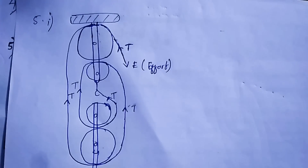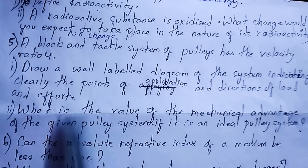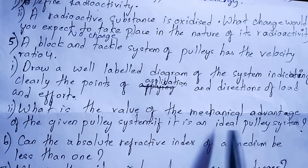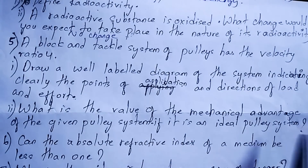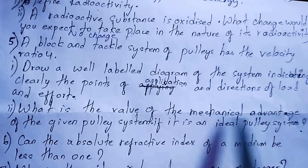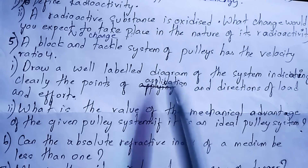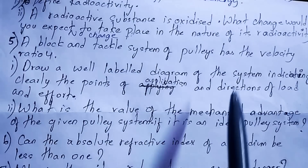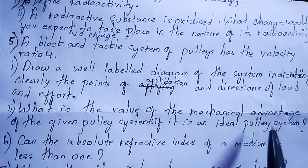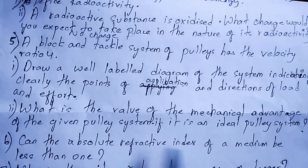Sub-part two of question five: what is the value of the mechanical advantage of the given pulley system if it is an ideal pulley system? Since it is an ideal pulley system, mechanical advantage equals velocity ratio, which is four. So mechanical advantage is also four.